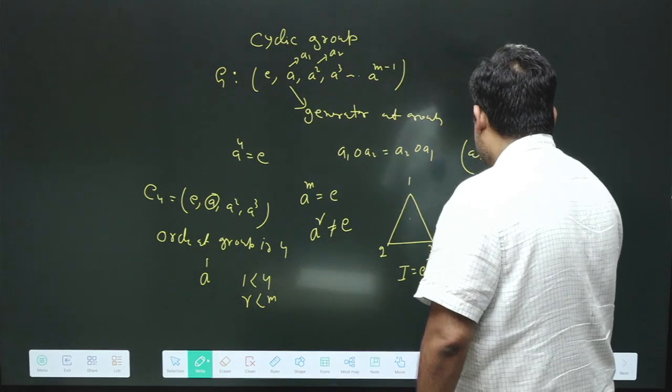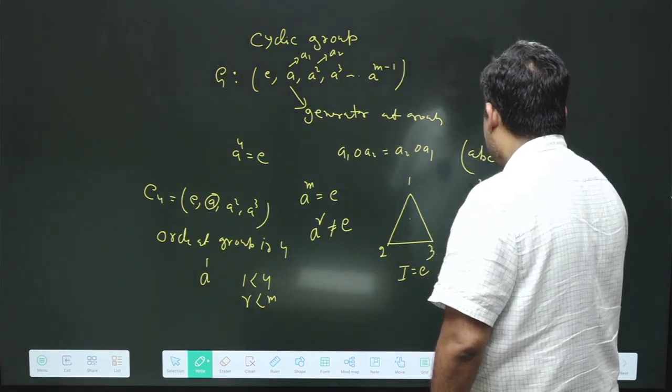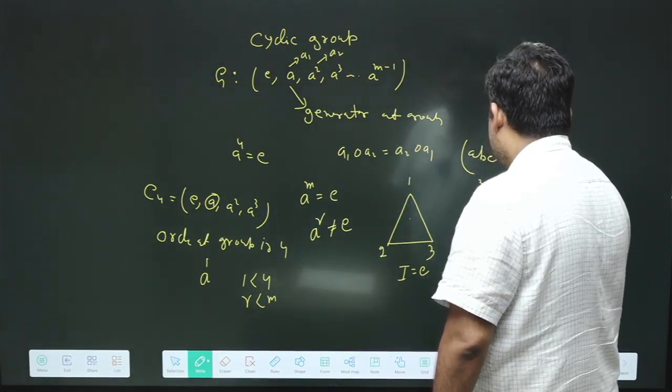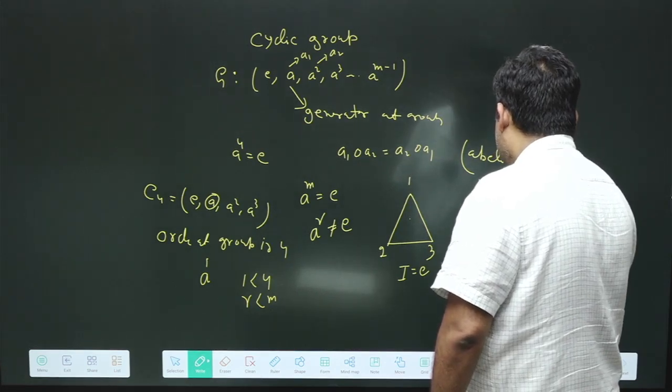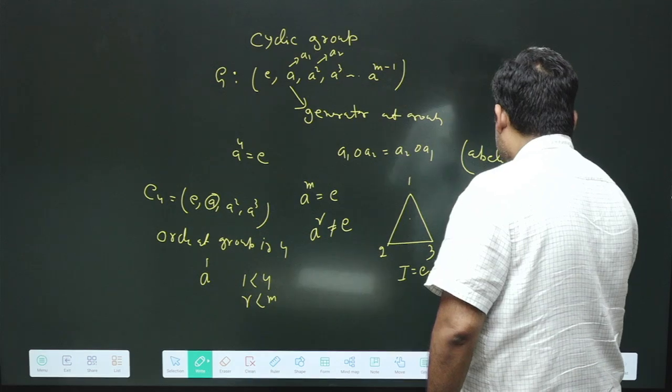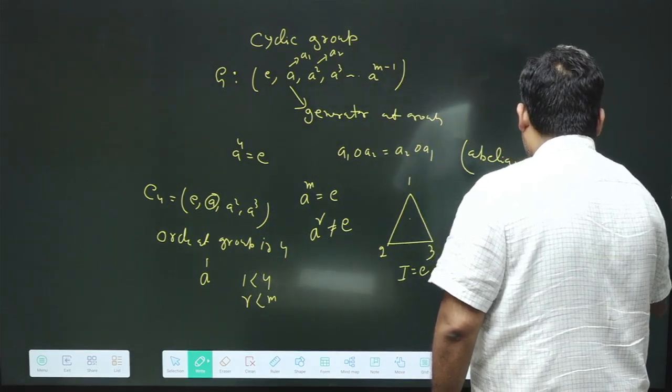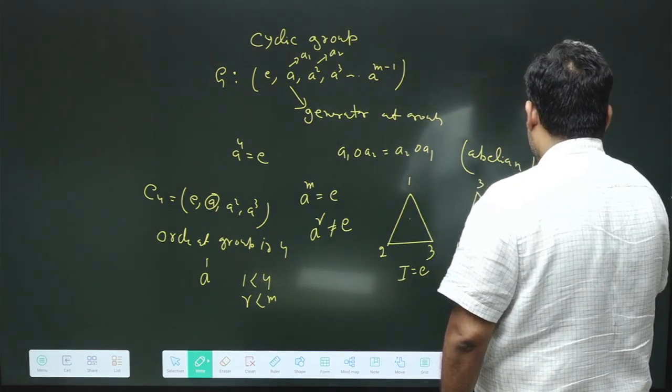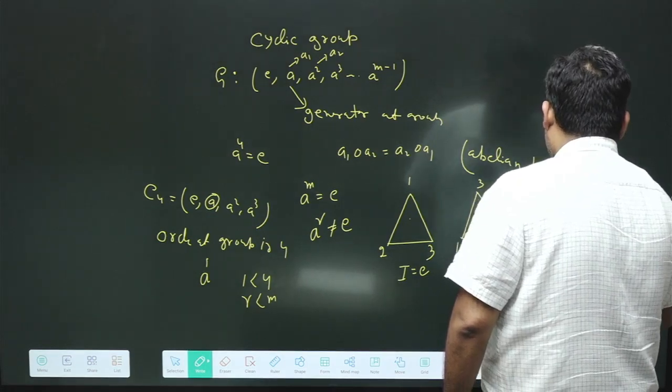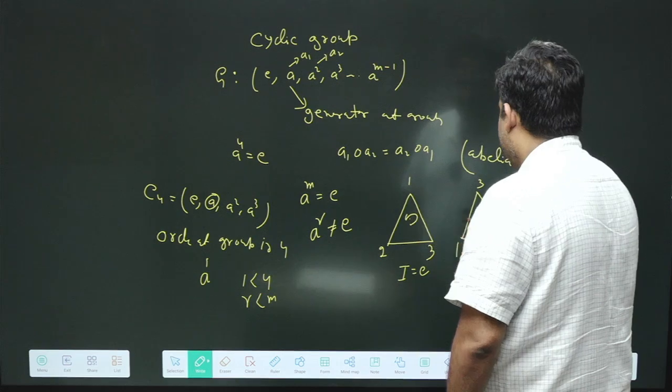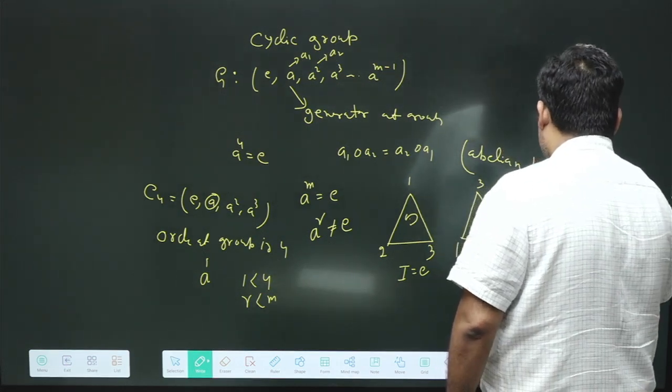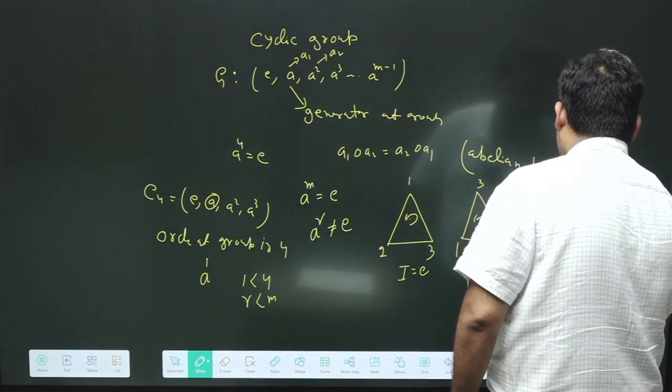The second operation is rotation where three is there, one is there, two, so rotation is 120 degrees. And third is where we have two, three, one, and we rotate in anti-clockwise direction about Z axis. This is rotation of 240 degrees.